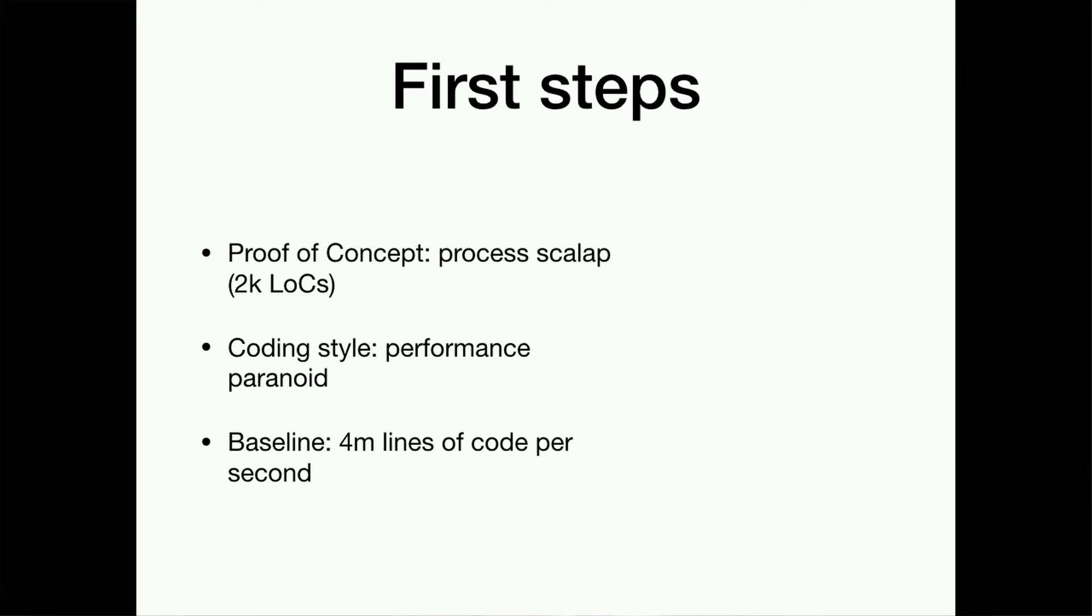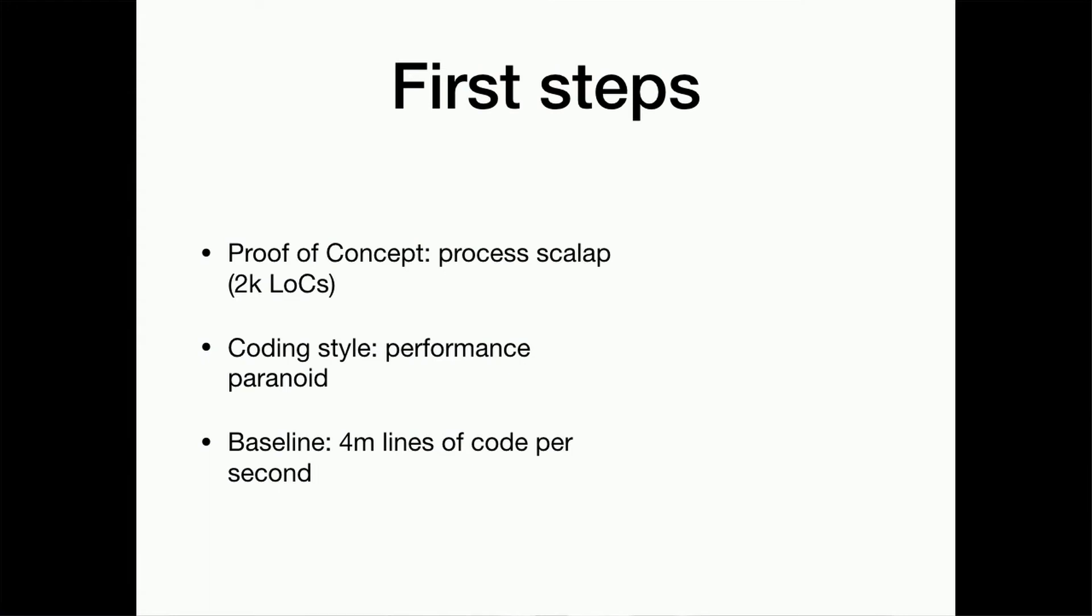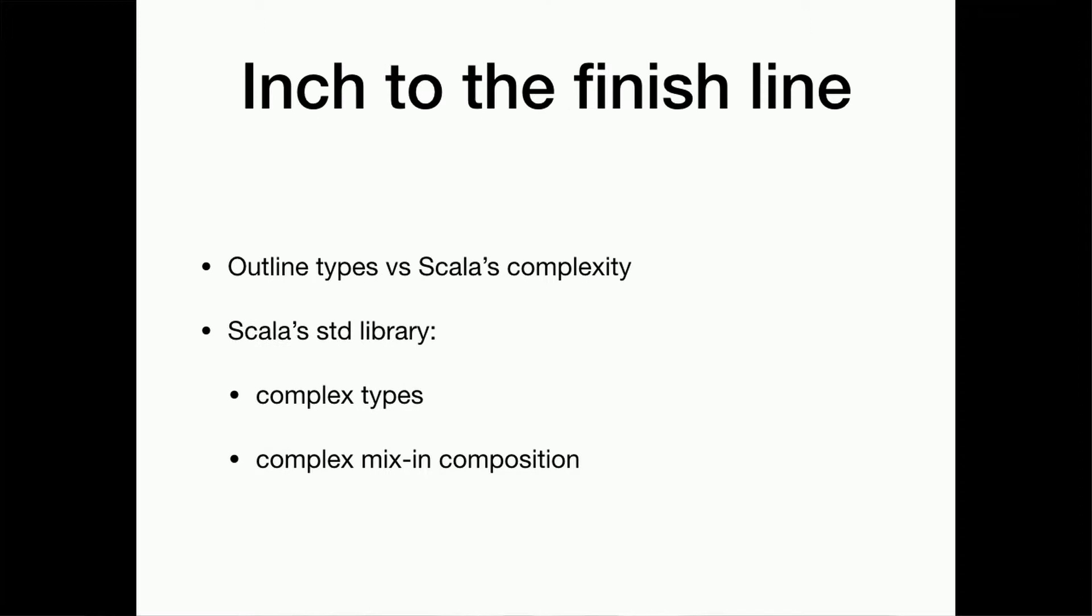As a proof of concept, I decided to process ScalaP, which is this not very well-known project, but it's tiny, self-contained. It has 2,000 lines of code. From the first line of Kentucky Build code, the coding style I adopted was performance paranoid. At each step of implementation, I was very carefully measuring the speed that I was getting. The performance numbers initially looked great. I established a baseline of processing 4 million lines of code per second.